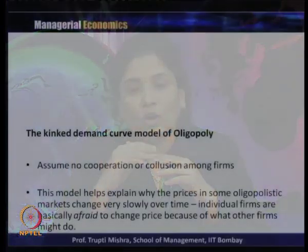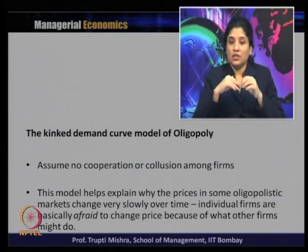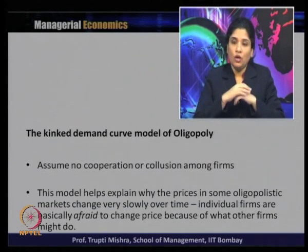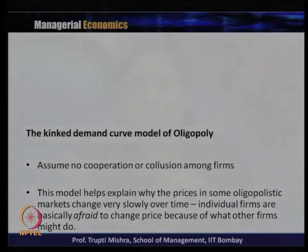We will now discuss the kinked demand curve model, which is another form of the non-collusive oligopoly model assuming no cooperation or collusion among firms. This model explains why price is rigid in the oligopoly market and why it changes very slowly over time. Individual firms are afraid to change their price because of what other firms might do. Decreasing price may not be slow, but increasing price is slow because others may not follow.